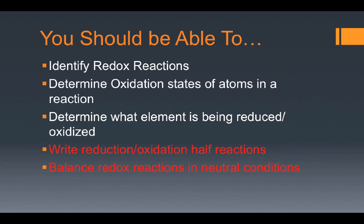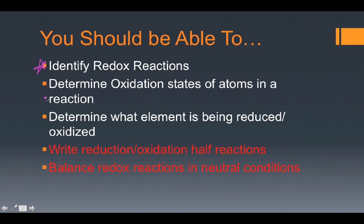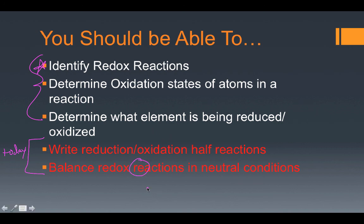At this stage, here's what you should be able to do: identify when you're dealing with a redox reaction, determine the oxidation states of each individual atom, and determine what element is being oxidized or reduced — all from old videos. What we talked about today is that you should now be able to write the reduction and oxidation half reactions, as well as balance those redox reactions under neutral conditions. Nothing really new — it's just the same kind of balancing you've been doing all along. We'll get to the more unique and interesting balancing when you watch the videos on acidic and basic balancing.